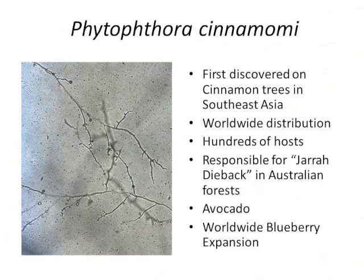It has many, many hosts — I've read 900 hosts in one publication. The primary economic host of importance is avocado worldwide. Recently, there's been a lot of blueberry expansion with the nutraceutical movement. Blueberry production has expanded worldwide, a lot of it going under drip irrigation because of the ability to fertigate. We are starting to see higher levels of disease under drip irrigation than under sprinkler irrigation.